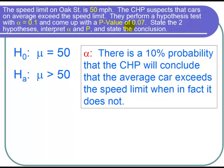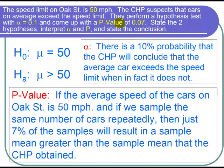Now let's write that down in words about this study. If the average speed of the cars on Oak Street is 50 miles per hour, so that is if H naught is true, and if we sample the same number of cars repeatedly, then just 7%, that's the 0.07, of the samples will result in a sample mean greater than the sample mean that the CHP obtained.